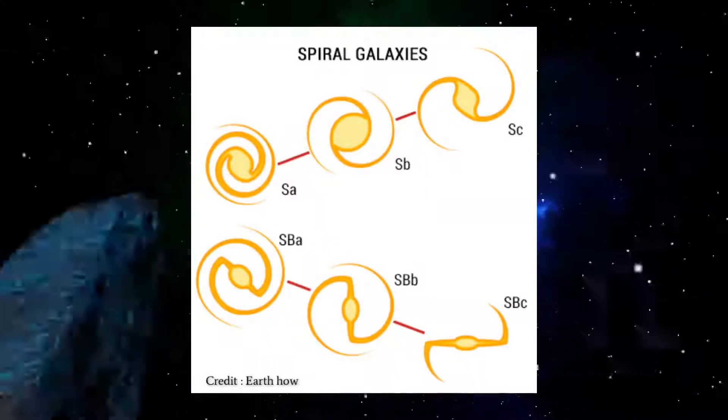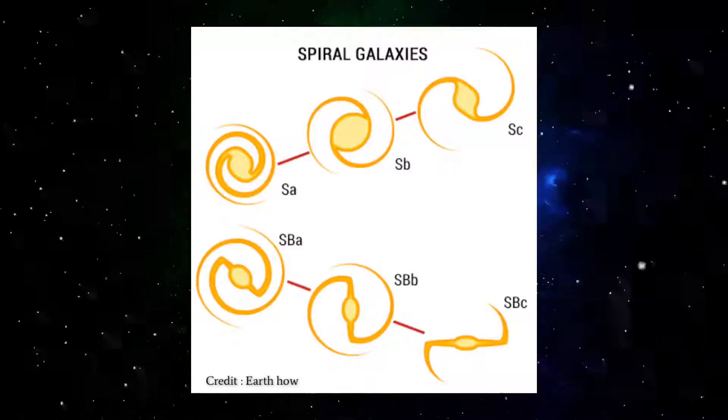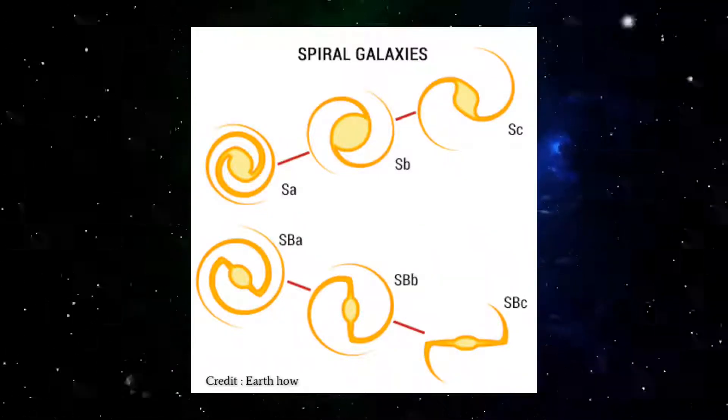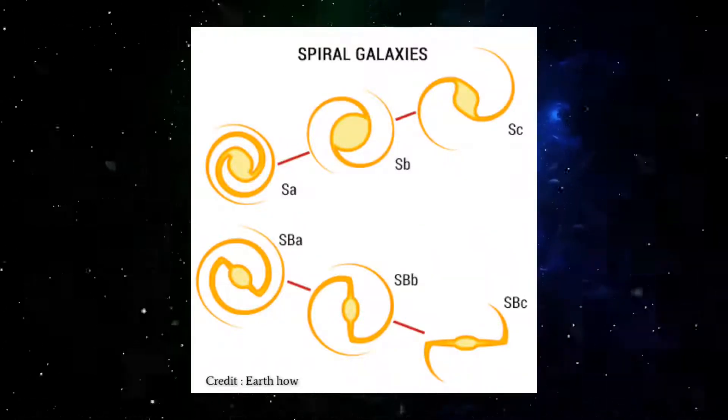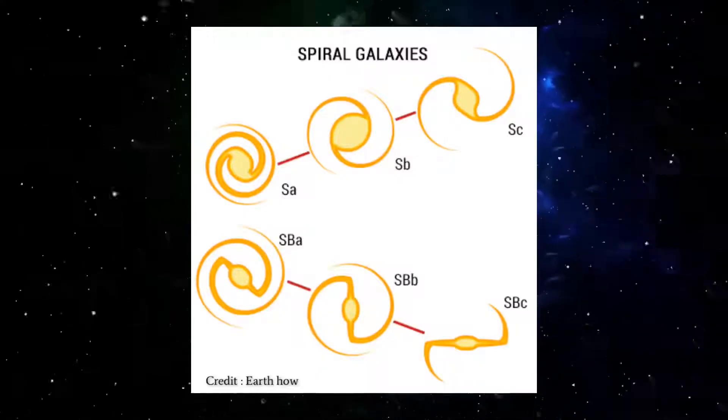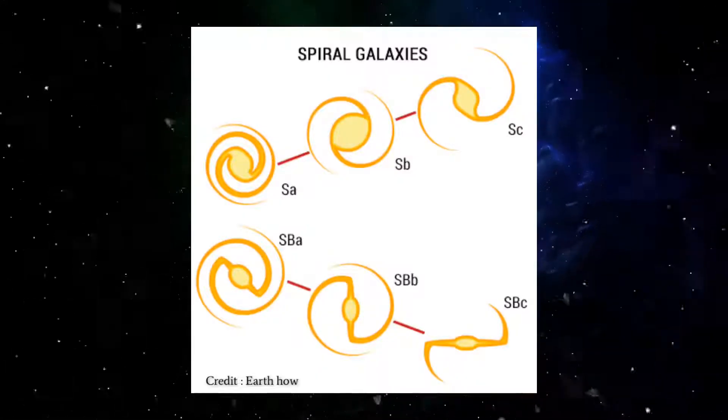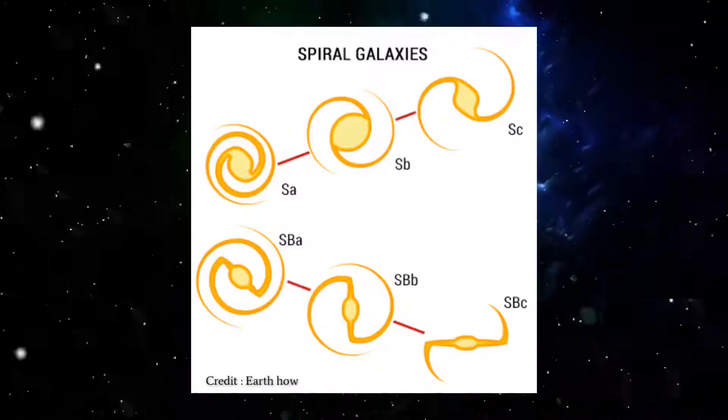Spiral galaxies are classified as Sa/SBa, Sb/SBb, or Sc/SBc (classic barred) according to the tightness of their spiral, the clumpiness of their spiral arms, and the size of their central bulge. These differences can be traced back to the relative amounts of gas and dust contained within the galaxies.